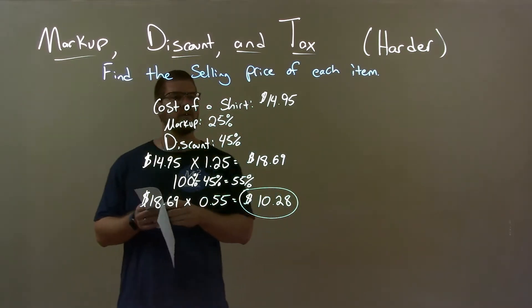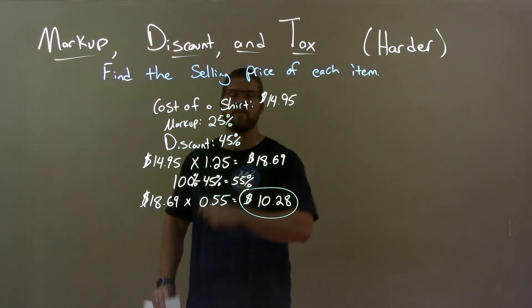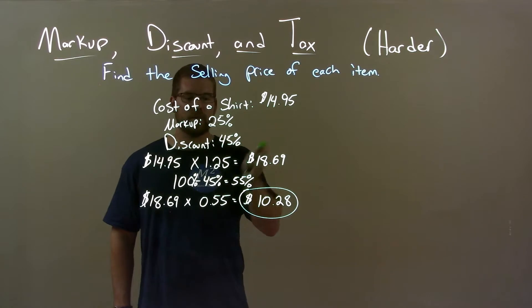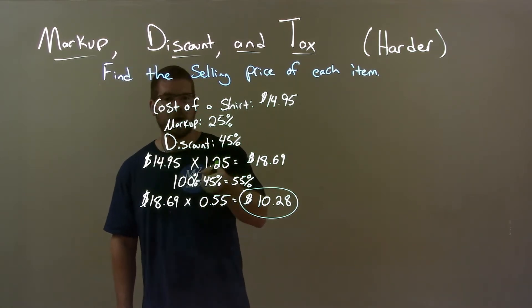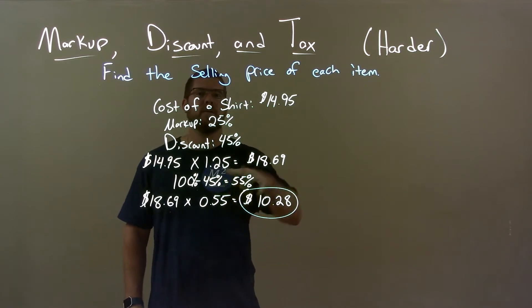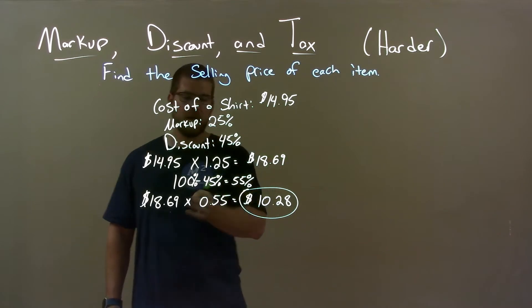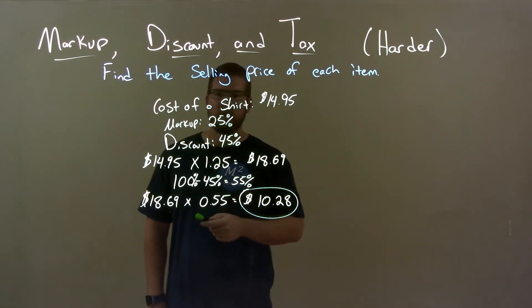Quick recap, we're given the cost of a shirt is $14.95, it has a 25% markup, and a 45% discount. First, we account for the markup of 25%. Then, the discount, we calculate that the 45% discount means we pay 55% of the price. So, we multiply that number right here, the markup value, times 0.55, and got a final answer of $10.28.